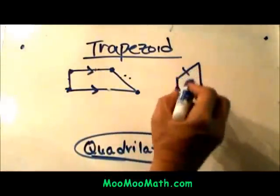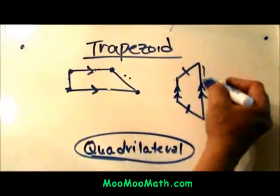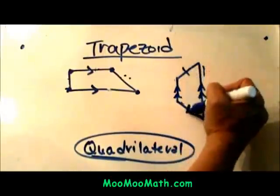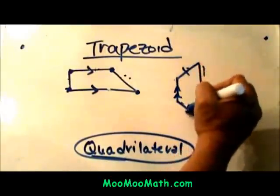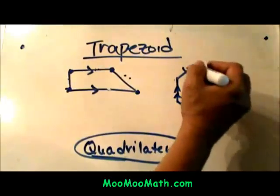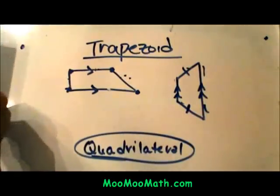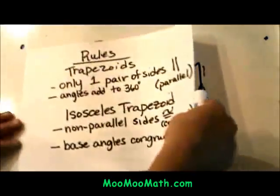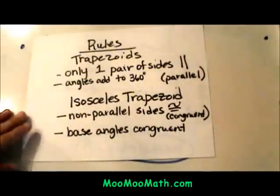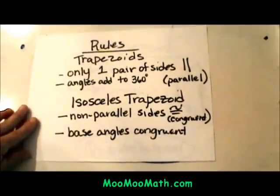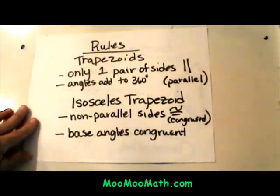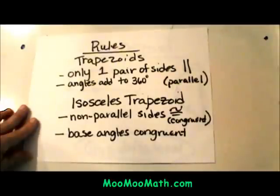Here is a second one where these two sides are parallel to each other, these two sides are not parallel, but they are congruent which means they have equal length. So let's look at the rules and we are going to talk about the names of those. The rules are trapezoids only have one pair of parallel sides — so two sides are parallel, two sides are not.